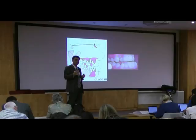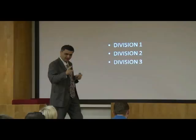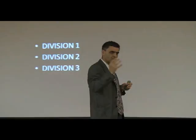Type 3C is a combination: retrusive maxilla and increased mandible. So far we have three classifications — skeletal class 1, 2, or 3 — and in subdivision we have skeletal 2A, 2B, 2C and skeletal 3A, 3B, 3C. Now let's go to the teeth.